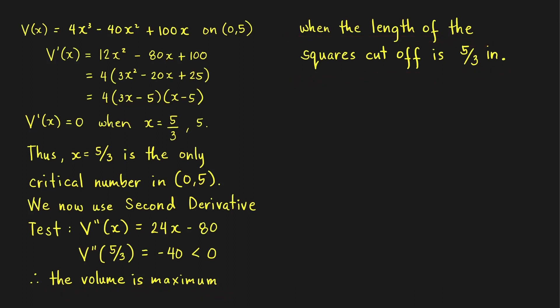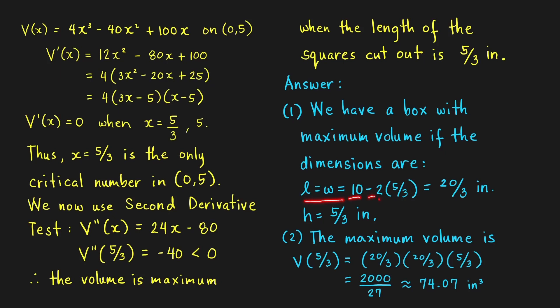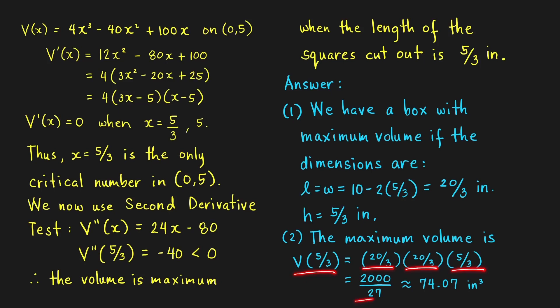For question 1: the box with maximum volume has length and width both equal to 10 minus 2(5/3) = 20/3 inches, and height equal to x = 5/3 inches. For question 2: the maximum volume is V(5/3) = length × width × height = (20/3) × (20/3) × (5/3) = 2000/27, which is approximately 74.07 cubic inches.